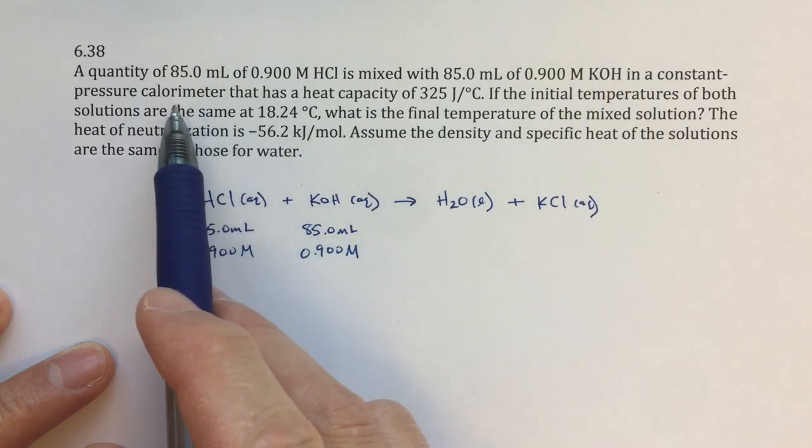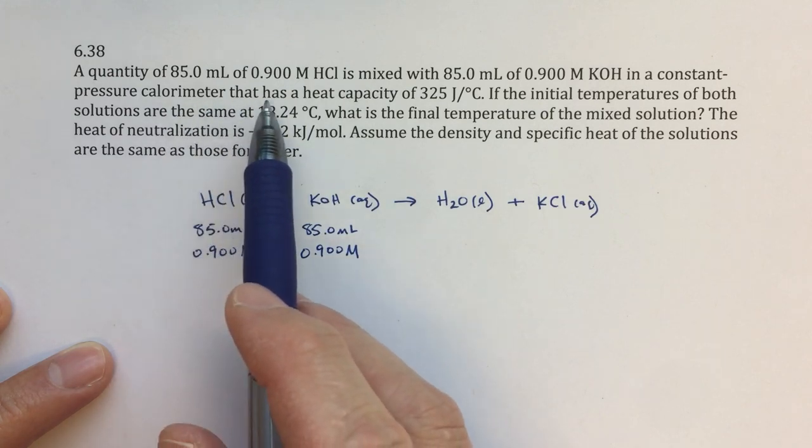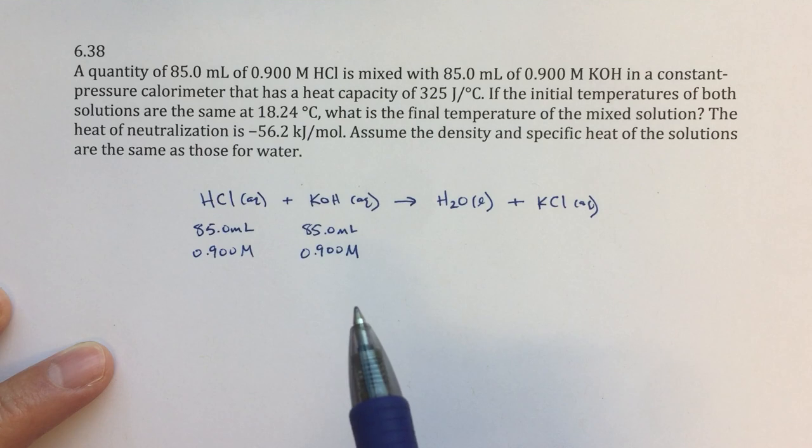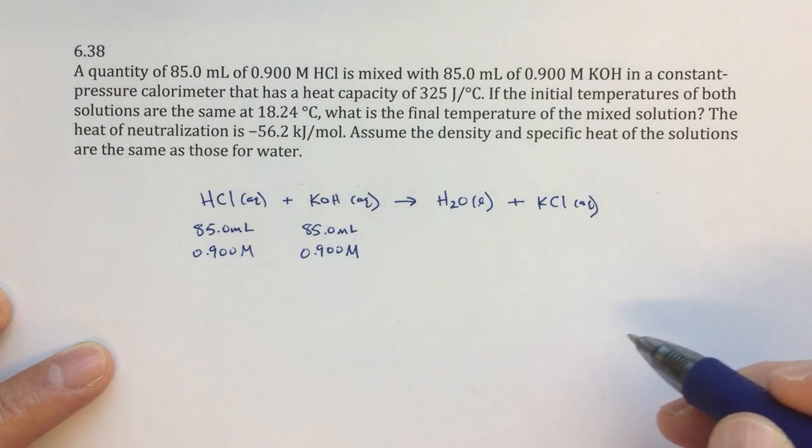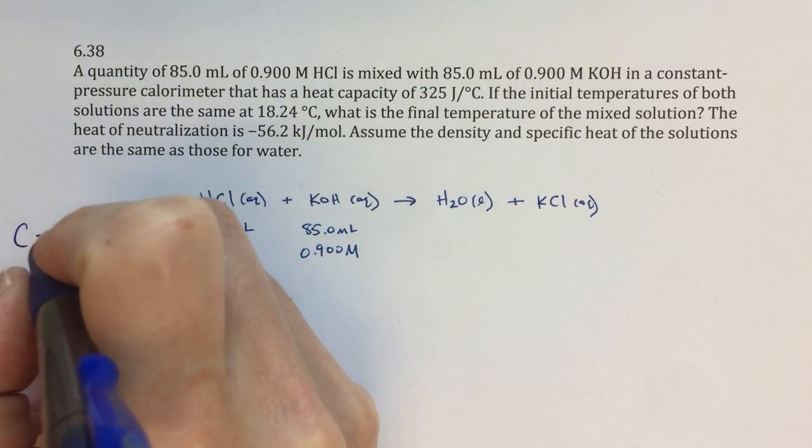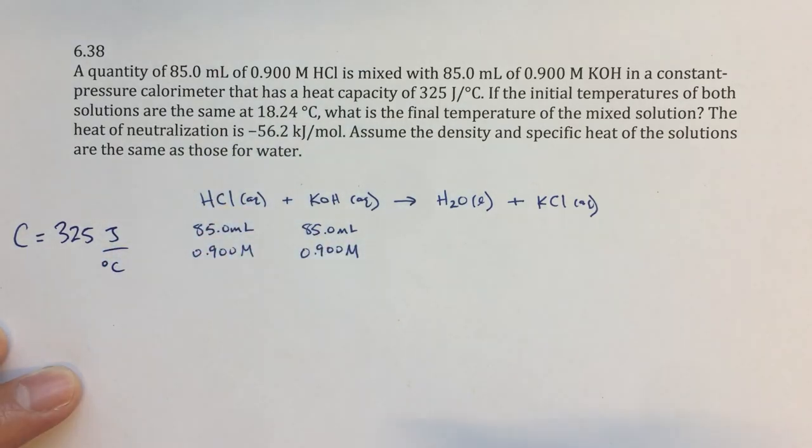So we're going to mix this stuff together in a constant pressure calorimeter, so we're going to be doing a calorimetry problem. There's a heat capacity of 325 joules over degrees Celsius. So that is what we consider to be a C value, so maybe over here to the side, I'll write C equals 325 joules over degrees Celsius, just to organize that.